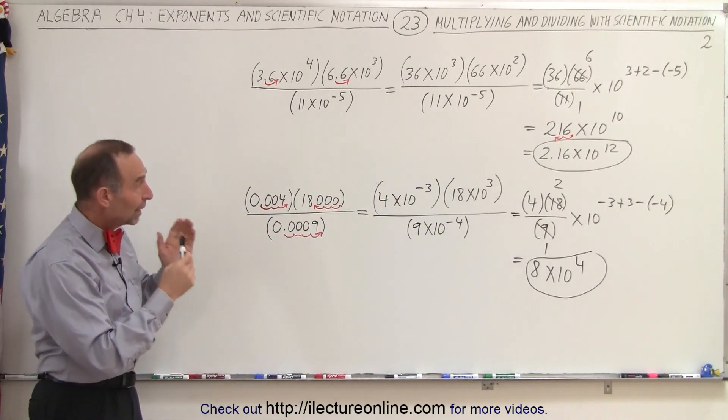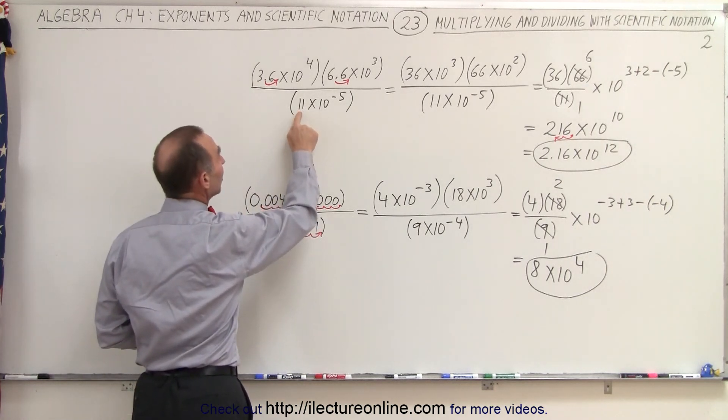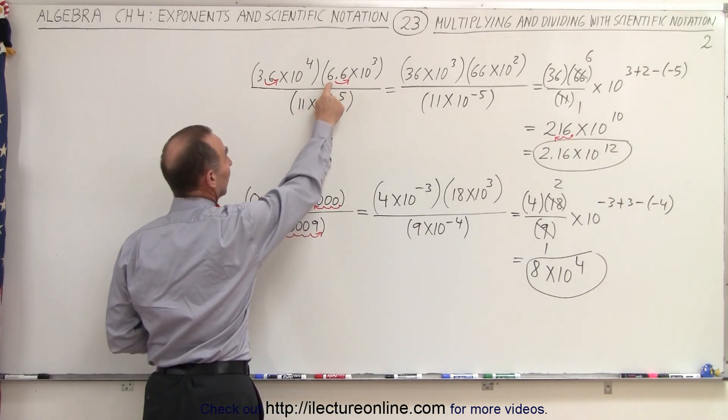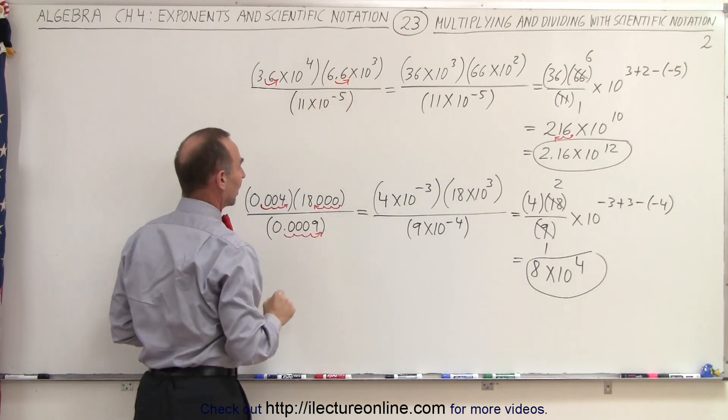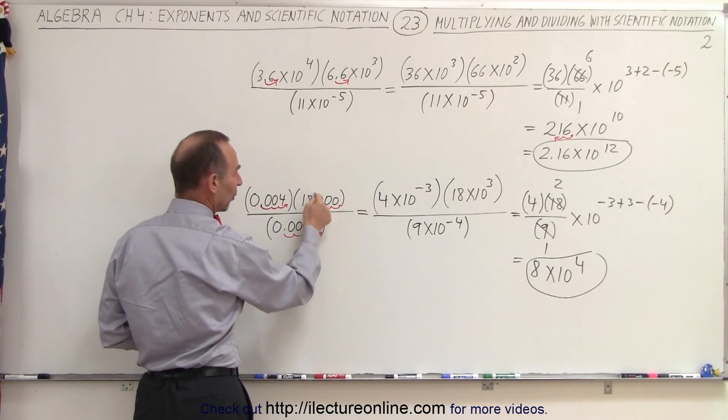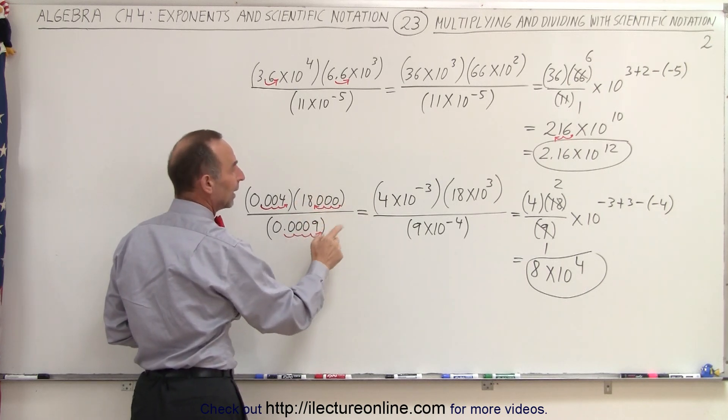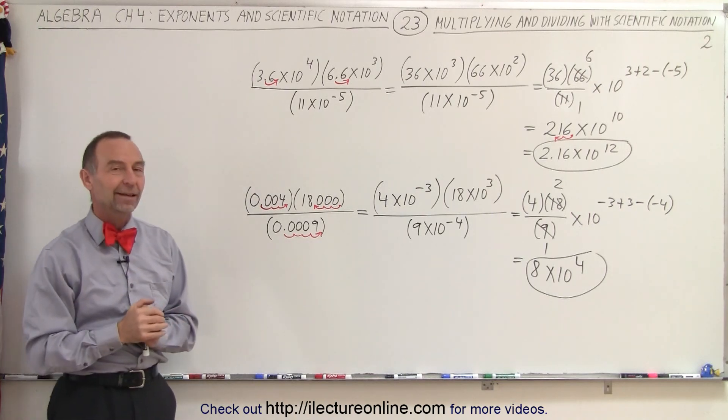So you can see by manipulating it just a little bit, kind of thinking ahead, seeing 11 in the denominator and a 6.6 in the numerator, we move the decimal place over one spot, we end up with 66 divided by 11. Here the same thing. If we move the decimal point only to this point, we end up with an 18 and 9. That makes it a lot easier to make the calculation. That is how it's done.